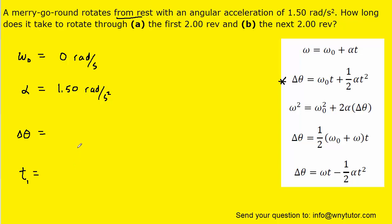Now, to solve part B, it turns out that we can use a sort of clever approach to doing that. Remember, we just figured out the time to get up to the first two revolutions. This question is asking us for the next two revolutions. So, in total, the merry-go-round would have traveled four revolutions. So, that would be our angular displacement.